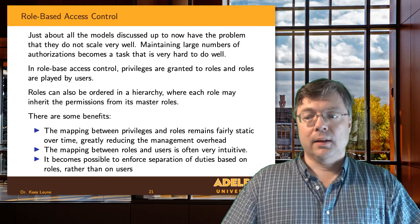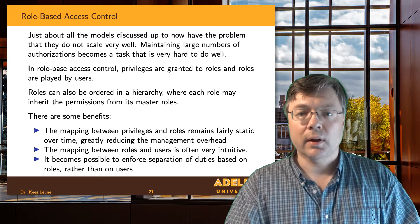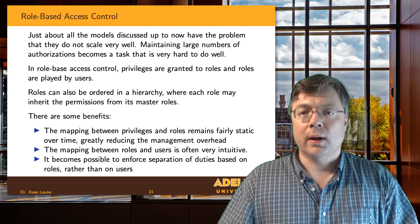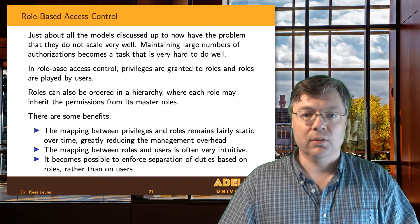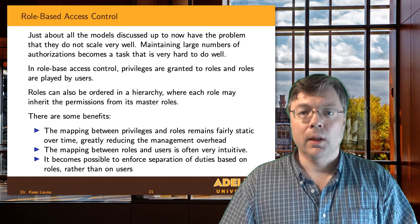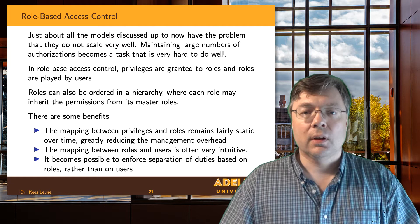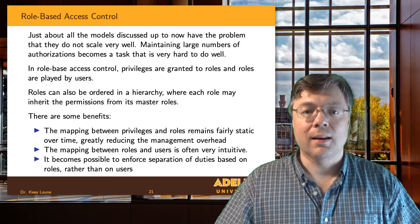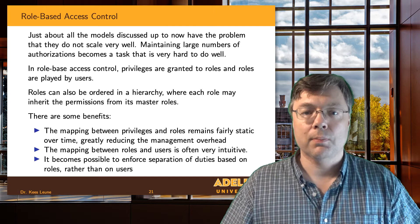The idea is that instead of assigning privileges directly to subjects, we're going to put a level of indirection in between. If I am subject to access control, it's because I have certain responsibilities and I play a particular role in the system. I will assign a subject to a role, and because of being assigned that role, I will receive certain privileges. This means privileges are also mapped to a role — subjects map to roles and privileges map to roles — giving me an indirect way of going from subject to privilege.